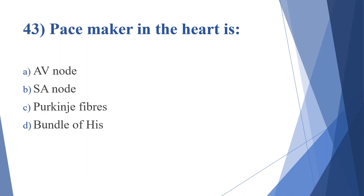Forty-third question: pacemaker in the heart is. Option A: AV node. Option B: SA node. Option C: Purkinje fibers. Option D: bundle of His. Answer is option B, SA node.